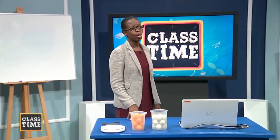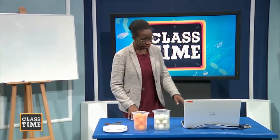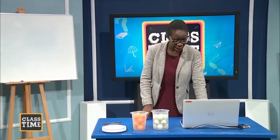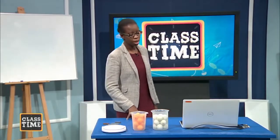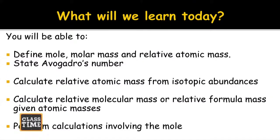Today we hope to learn the following: to define the mole, molar mass, and relative atomic mass; to state Avogadro's number; and to calculate relative atomic mass from isotopic abundances. We'll also calculate relative molecular mass or relative formula mass given atomic masses, and perform calculations involving the mole.